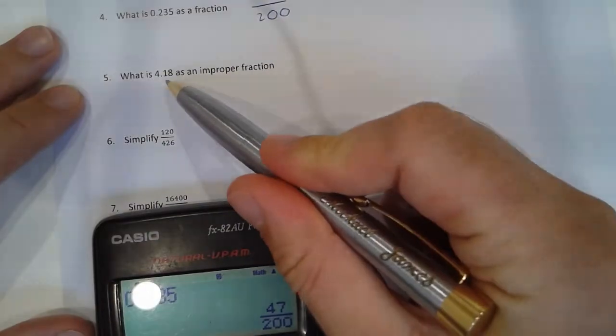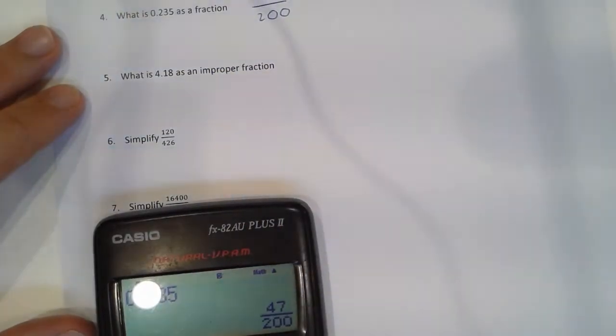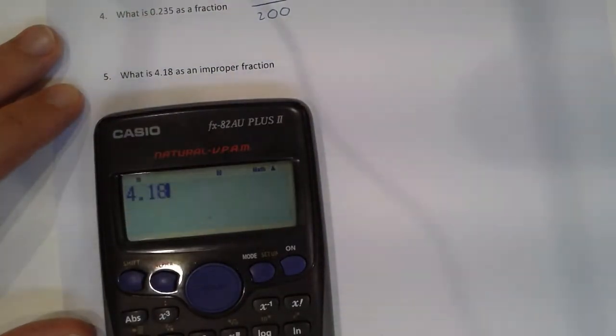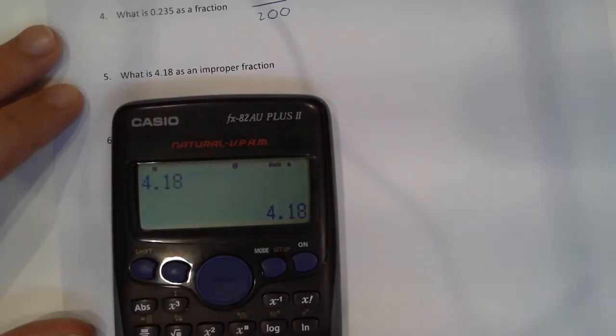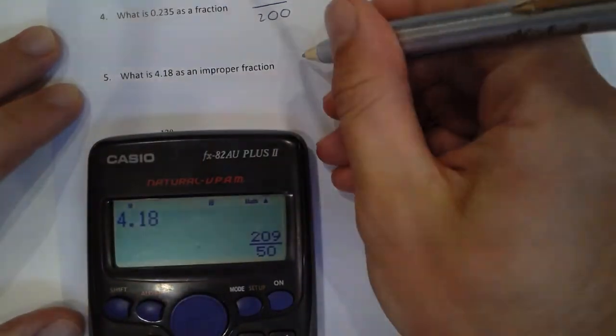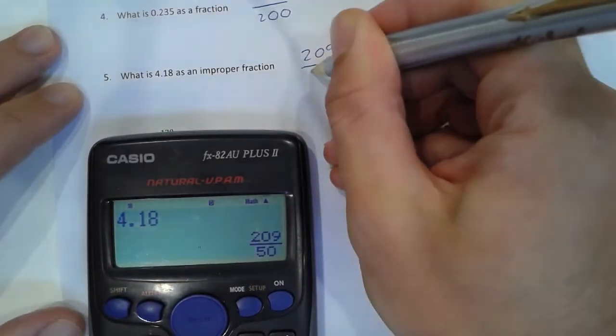Same as number 5. 4.18 as an improper fraction. 4.18 equals. Press my SD button. And the calculator does the work for you. Easy.